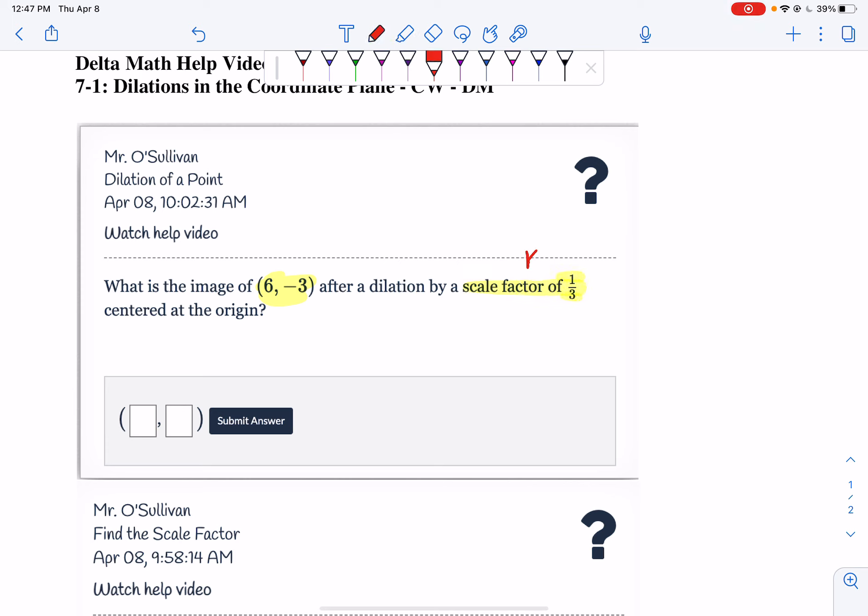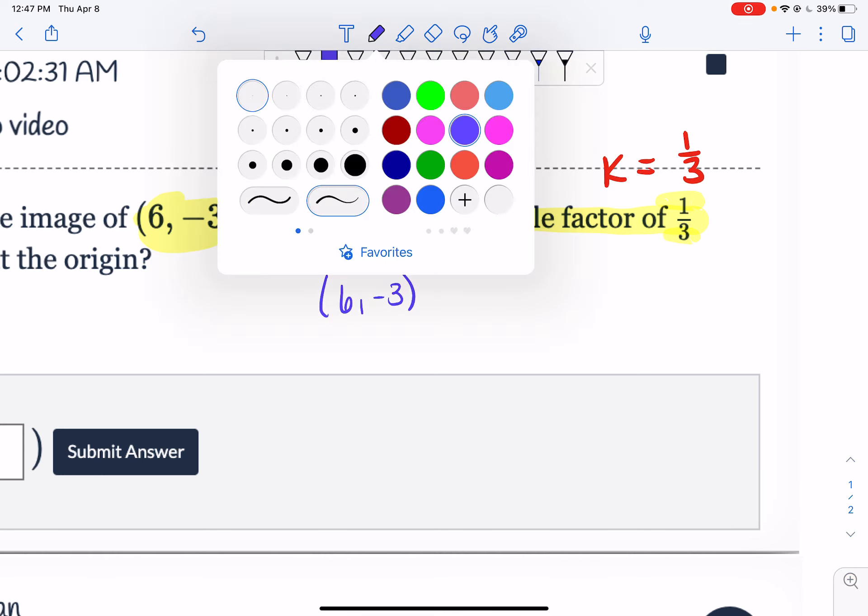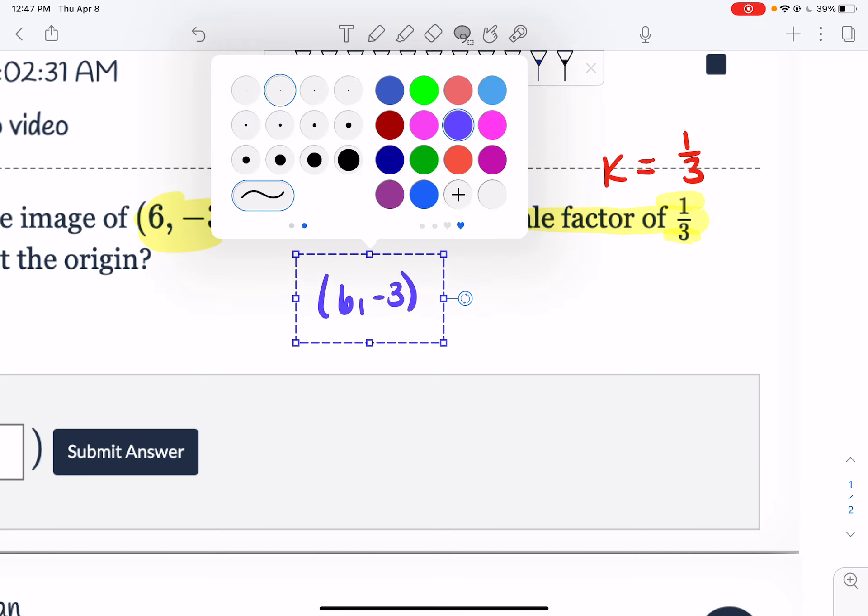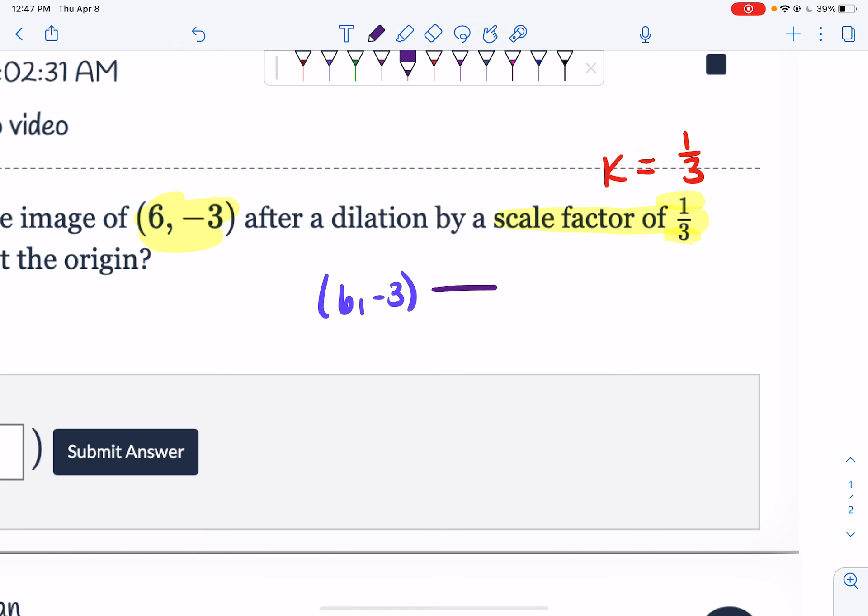So I know k is equal to 1/3. So what I like to do is I like to rewrite my ordered pair. So I'm going to rewrite my (6,-3). So I rewrote my (6,-3). Let me just make it a little darker.